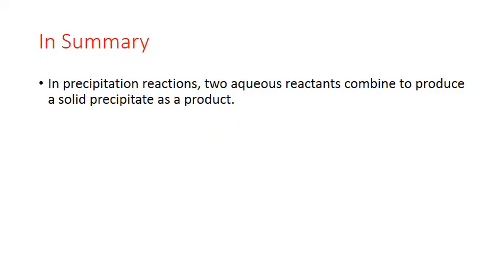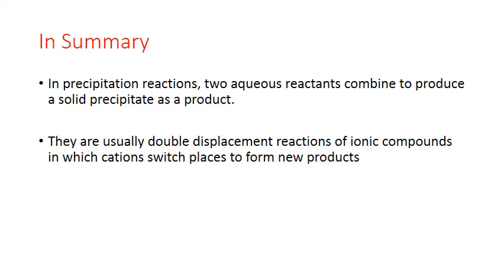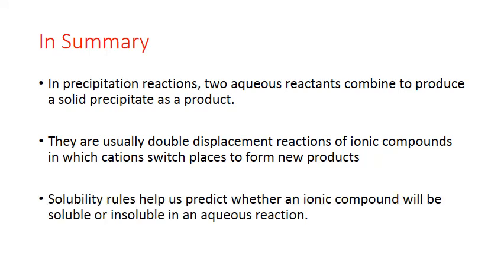In summary: in precipitation reactions, two aqueous reactants combine to produce a solid precipitate as a product. Precipitation reactions are usually double displacement reactions of ionic compounds in which cations switch places to form new products. Solubility rules help us predict whether an ionic compound will be soluble or insoluble in an aqueous reaction.